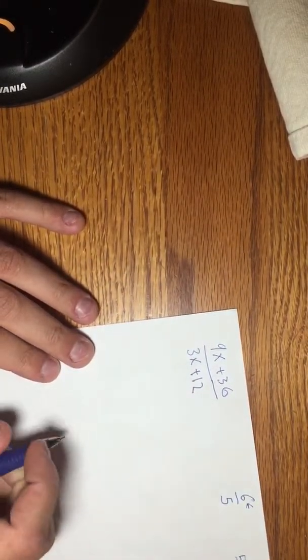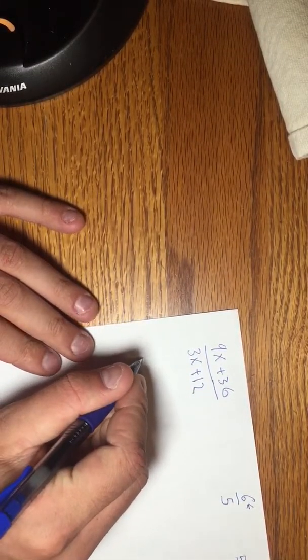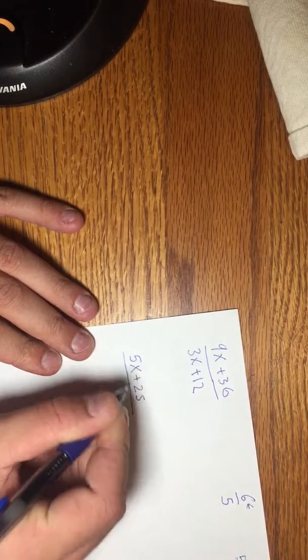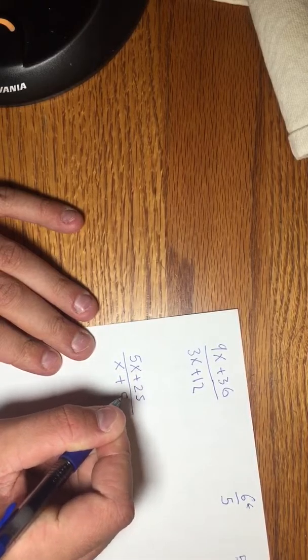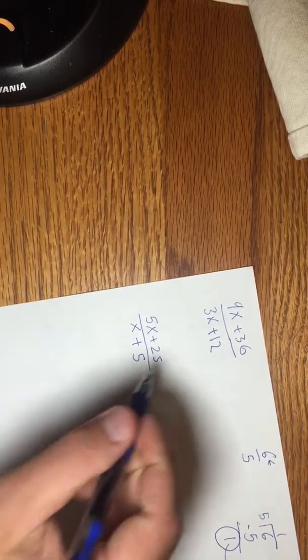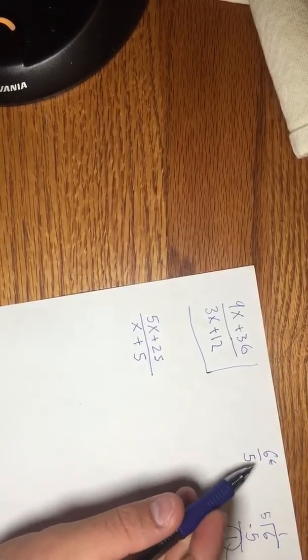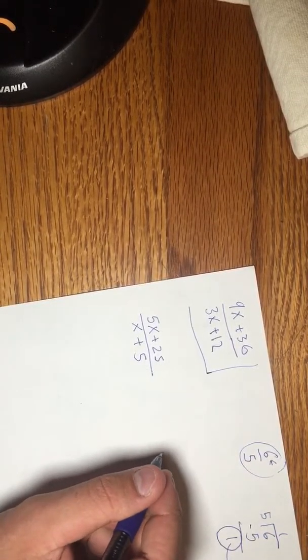So let's look at this problem again, and I'm going to change up the numbers a little bit. Let's do 5x plus 25 over x plus 5. I'm not going to tell you exactly how to do this one, but I'm going to tell you how to do this one. So let's use the same idea that we used up here. Remember, we put the top one inside.